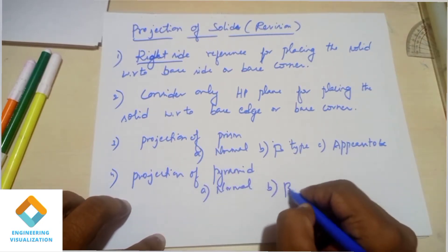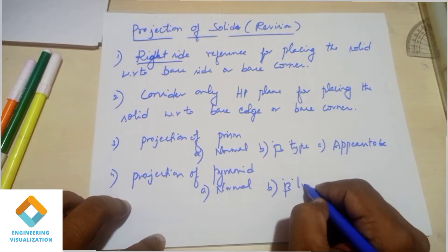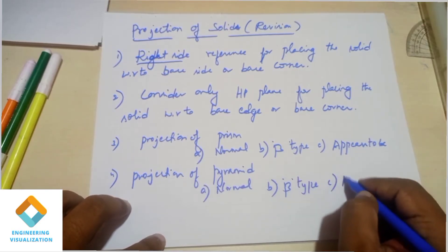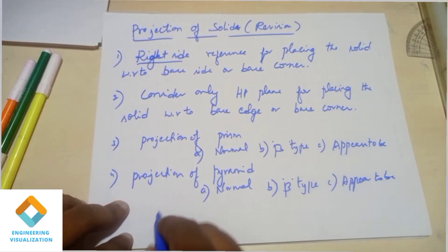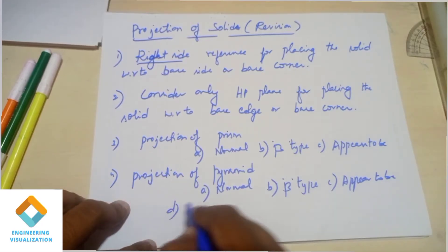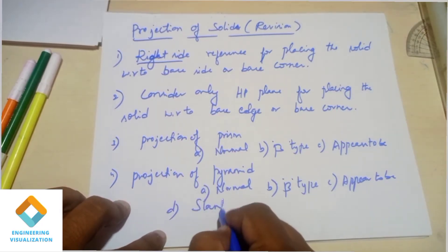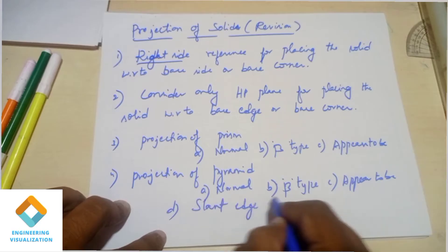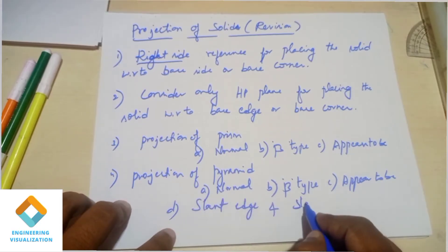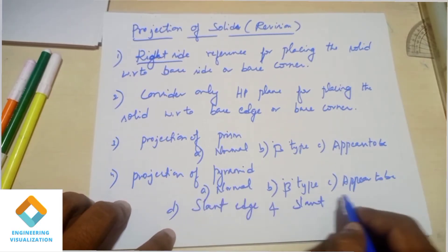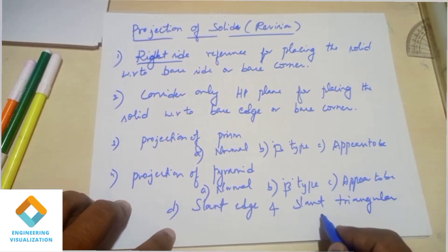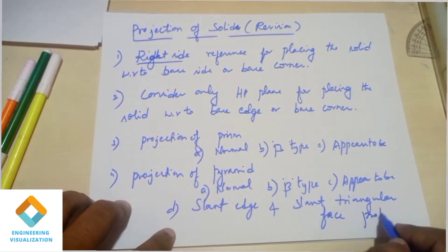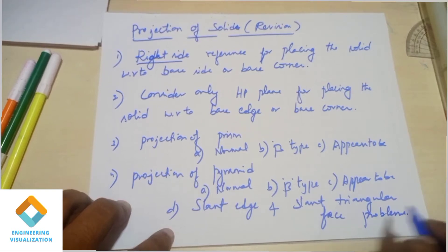As you can see, slant edge and slant triangular face. So slant edge and slant triangular face — slant triangular face. Projection of pyramids: slant edge, corner position, slant triangular face, edge position. The first position you can decide with respect to the question given.